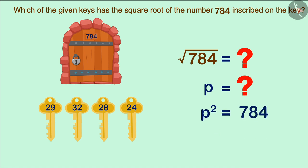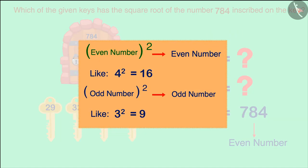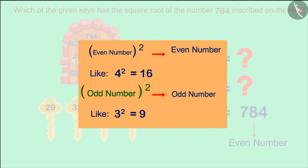Here we can see that the number 784 is an even number, which means that P will also be an even number. Because the square of even numbers is always an even number and the square of odd number is always odd.